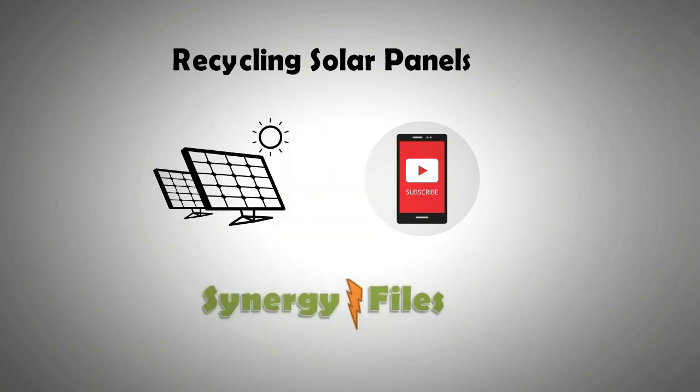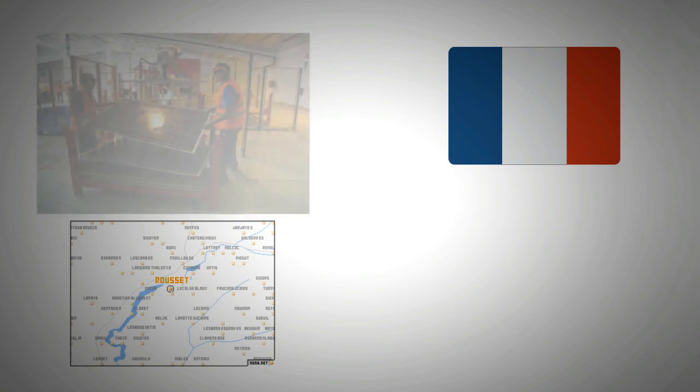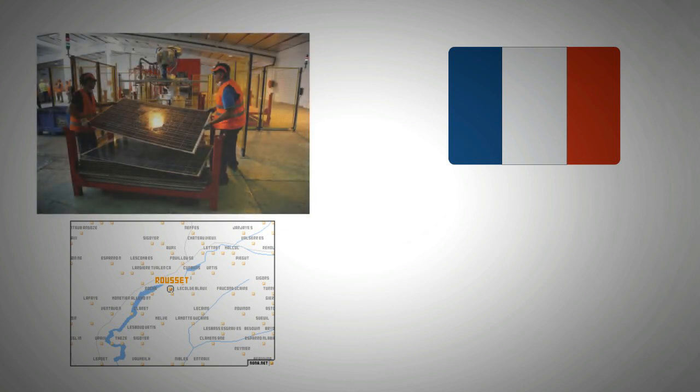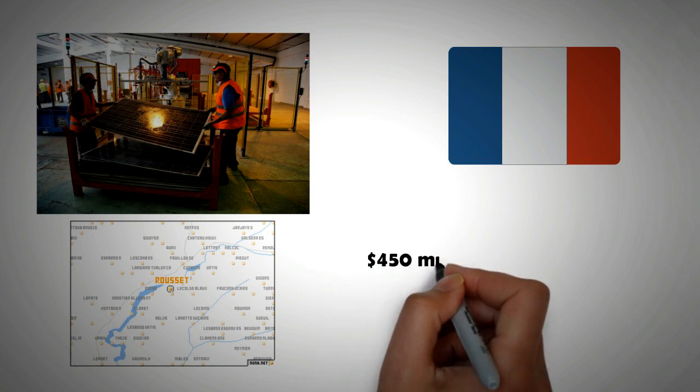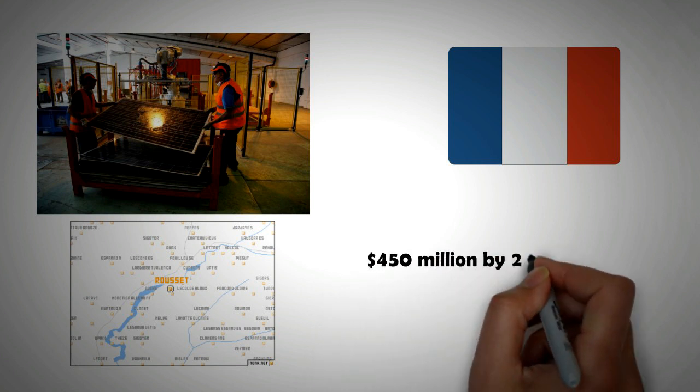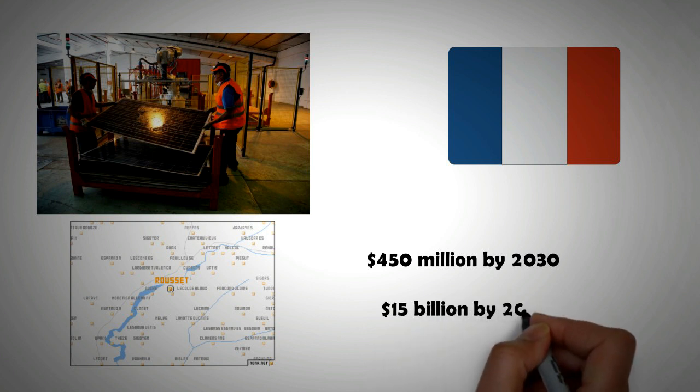In June 2018, the first solar photovoltaic recycling facility opened in France. Now it is estimated that thousands of tons of aging solar panels are set to reach their end of life in the coming years. A study conducted has revealed that recovered materials could be worth $450 million by the year 2030 and exceed $15 billion by 2050.